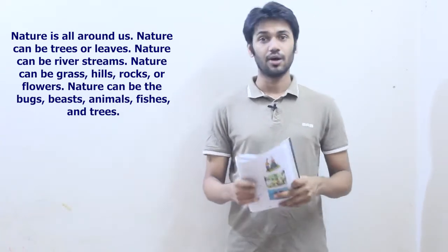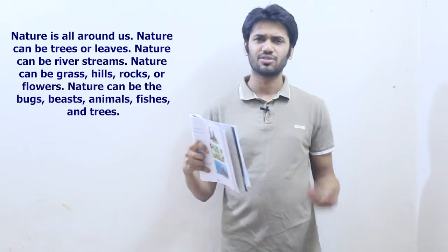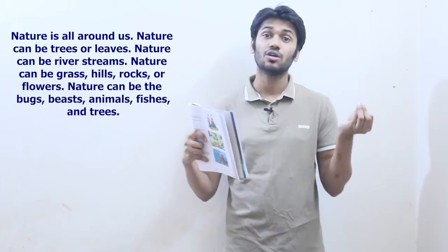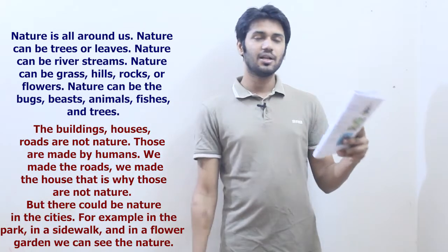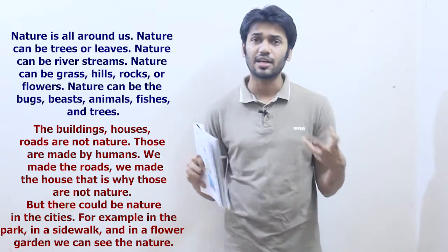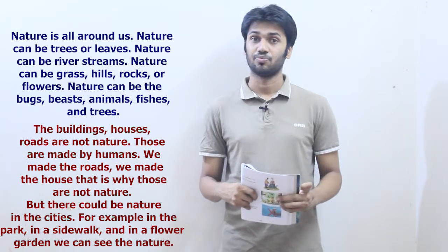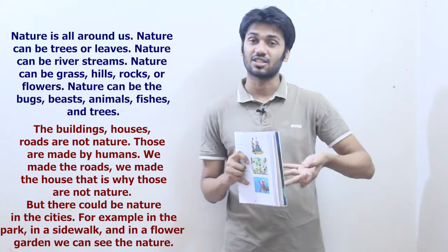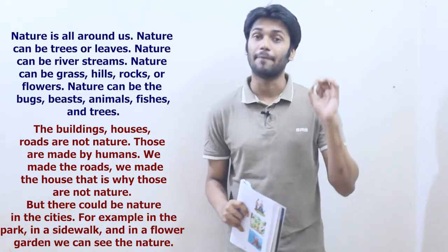Then you go through the reading. Let me show you how you should read it. Nature is all around us. Nature can be trees or leaves. Nature can be river streams. Nature can be grass, hills, rocks, or flowers. Nature can be trees. So the buildings, houses, and roads that we have built — they are not nature. Those things are manmade. Make sure your students understand the differences between nature and not nature. Things that we have made are not nature; things that have come automatically are considered to be a part of nature.